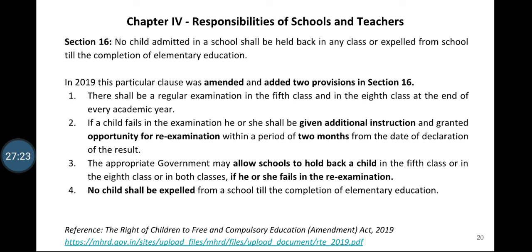The 2019 amendment added provisions in Section 16: there shall be a regular examination in the fifth class and in the eighth class at the end of every academic year. If a child fails in the examination, he or she shall be given additional instruction and granted the opportunity for a re-examination within a period of two months from the date of declaration of results. The appropriate government may allow schools to hold back a child in the fifth class or in the eighth class if he or she fails in the re-examination. However, no child shall be expelled from school till the completion of elementary education.